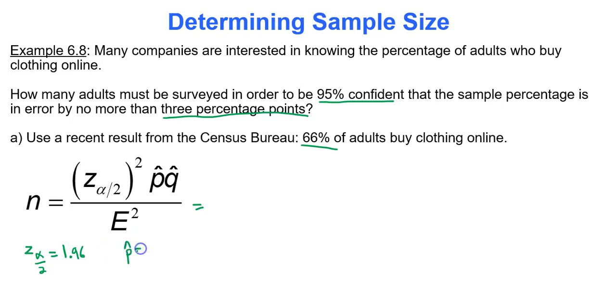P-hat, our point estimate here is going to be 0.66. That's our sample proportion. What about q-hat? It's 1 minus 0.66, so that's 0.34. And what else do we have to know? We need to know that error. They said they want the error to be no more than 3 percentage points. So that means the error E would equal 0.03. 3% would be 0.03.